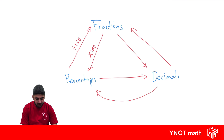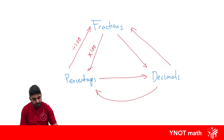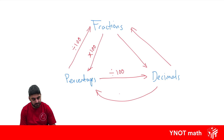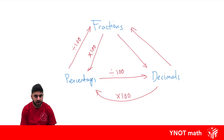To go from a percent to a decimal is the same as going from a percent to a fraction — we're going to divide by 100. And going from a decimal to a percentage is the same as going from a fraction to a percentage — we're going to times by 100. So those ones are relatively easy. The trickiest ones are the fractions and decimals conversion.